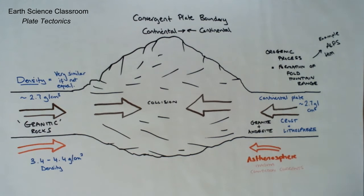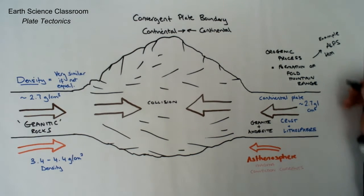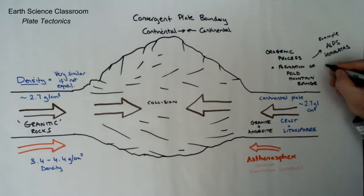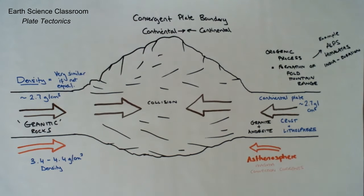It's going to sink down deeper into the asthenosphere which will create what's called lithostatic equilibrium. This is very common in this situation of two plates that are both the same density, a great example being the Alps and Himalayas which is India smashing into Eurasia.